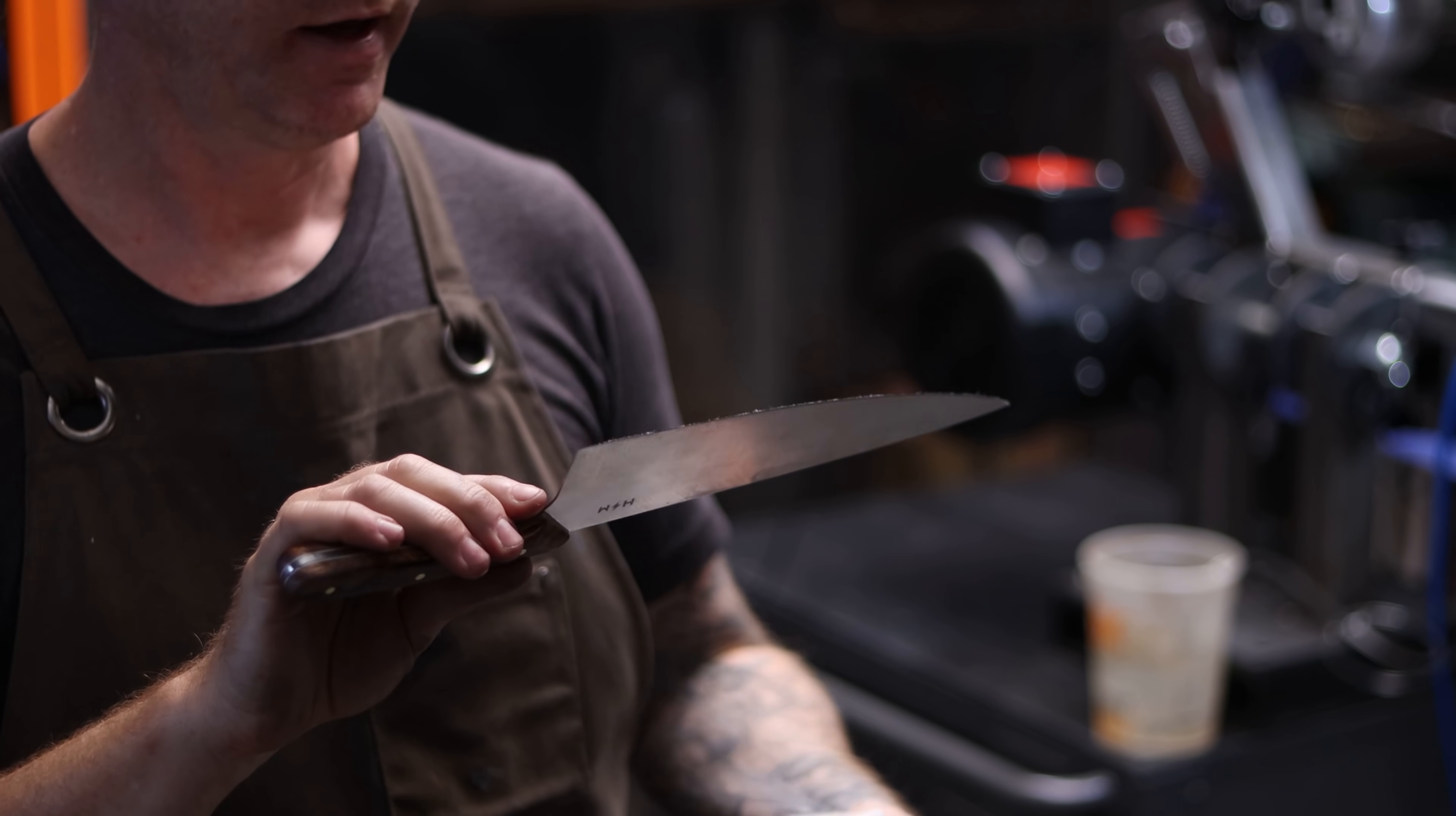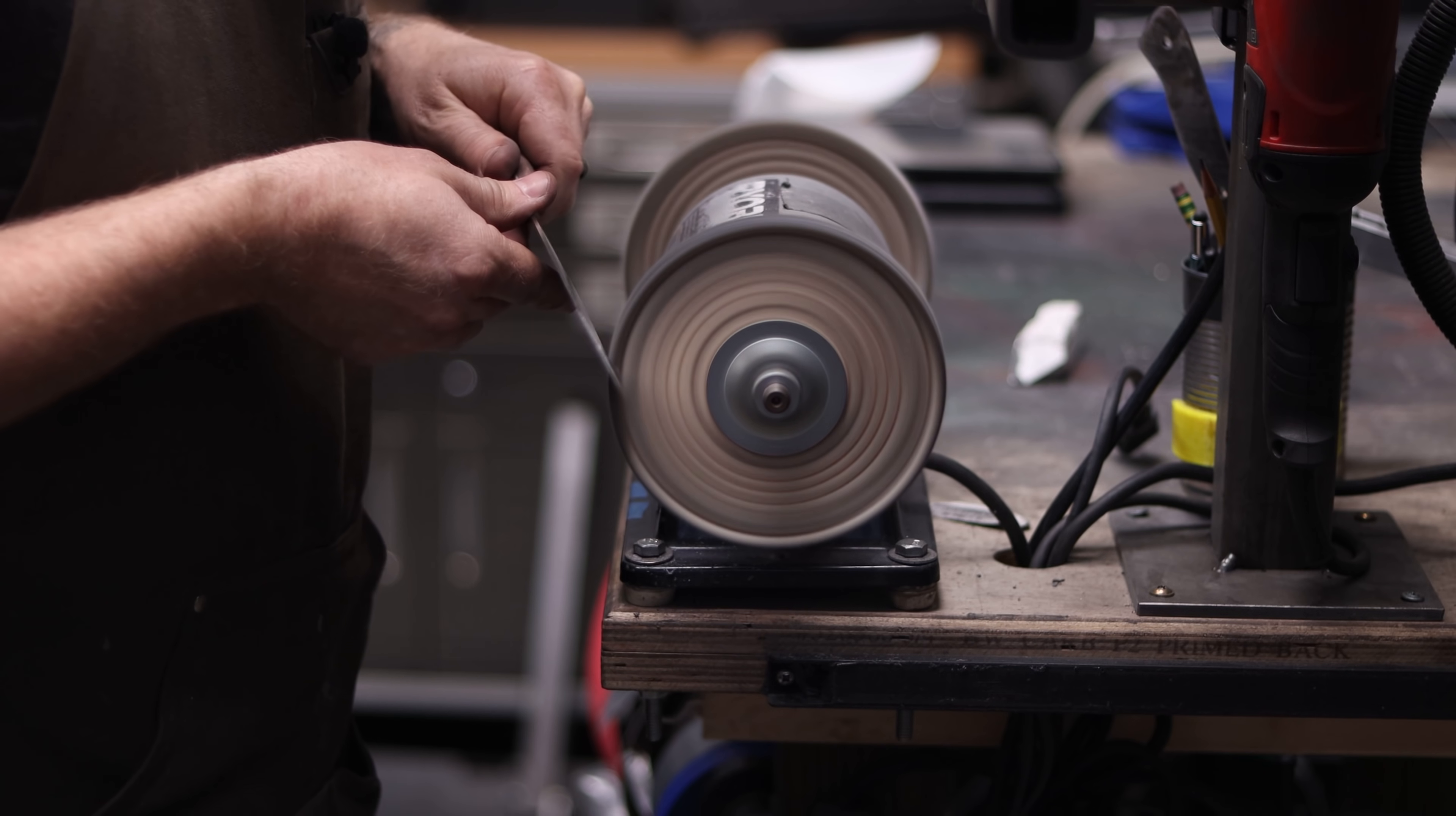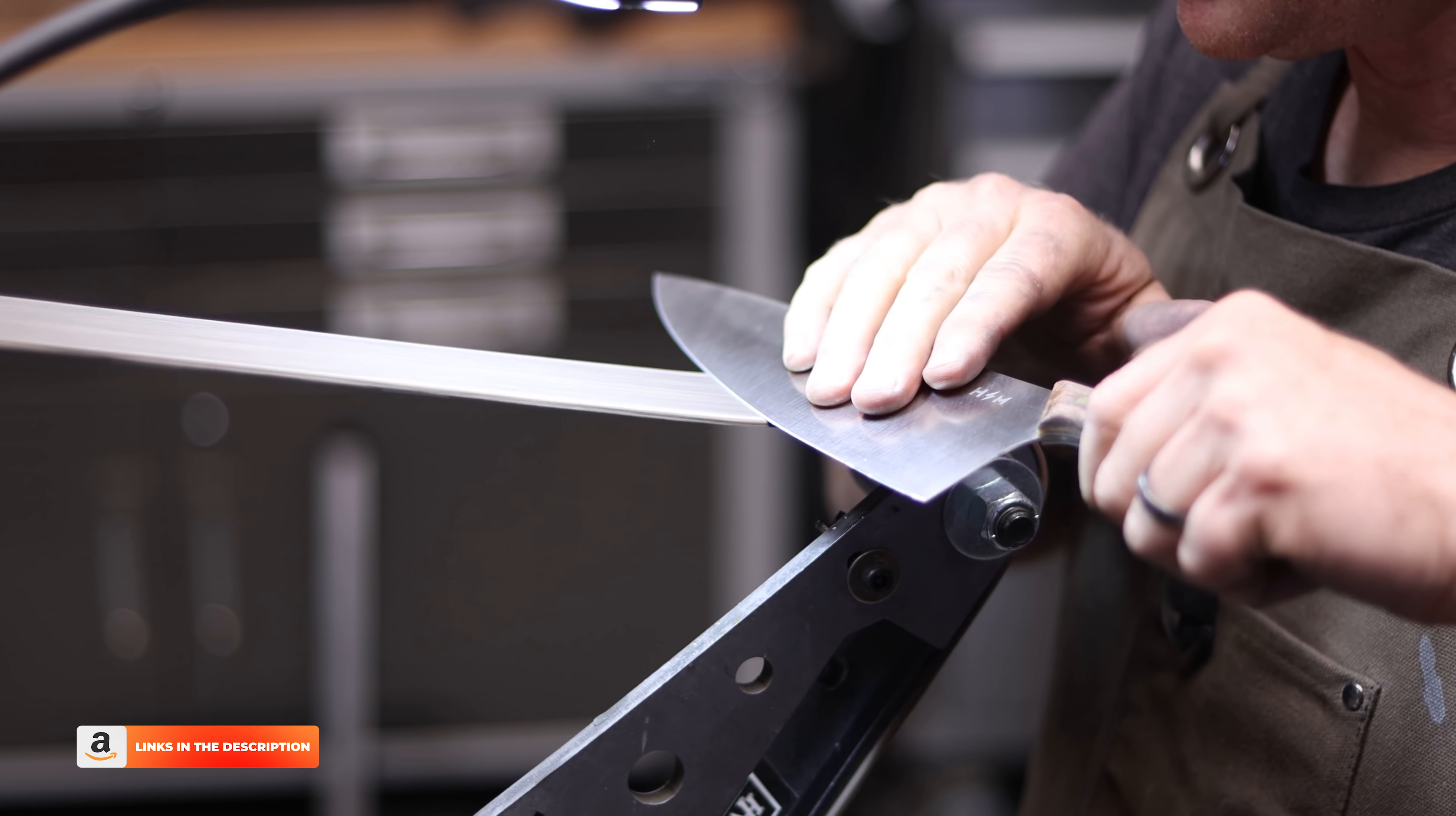Now you have a couple of choices there. My quick go-to is to use a buffing wheel and strop it on a buffing wheel. But if you want to preserve the finish on the blade, they do make a 2x72 leather strop that you can throw right on your grinder. So that's the cleaner way to do it. I will include links to that down in the description so you can find one for yourself. Let's strop this thing and give it a cutting test.